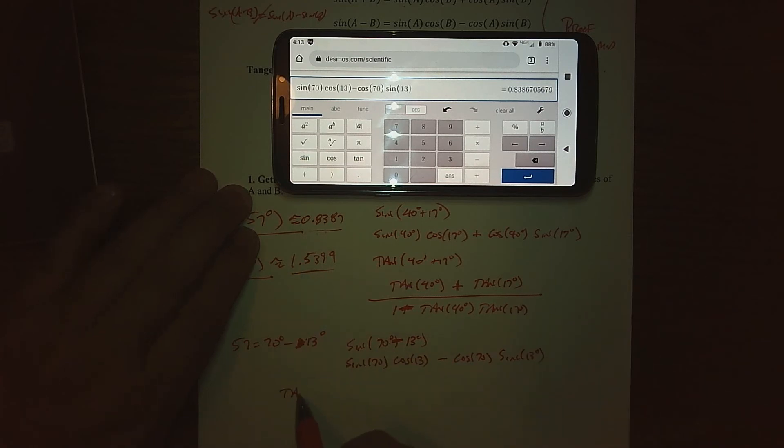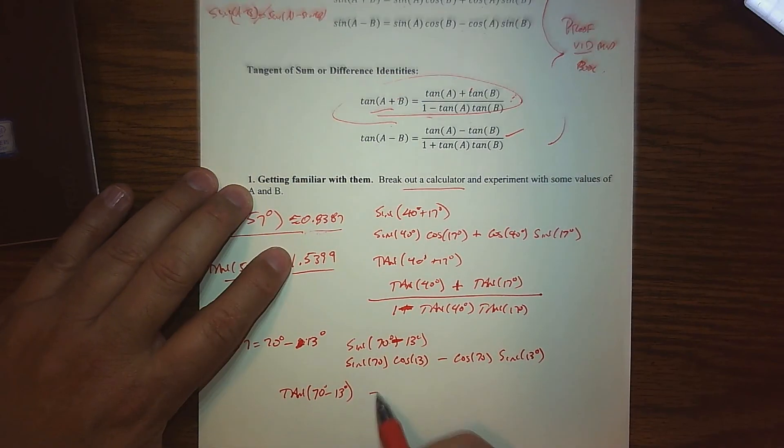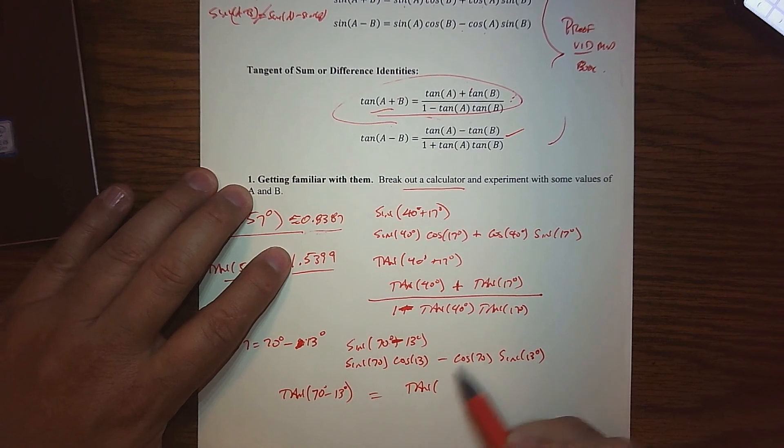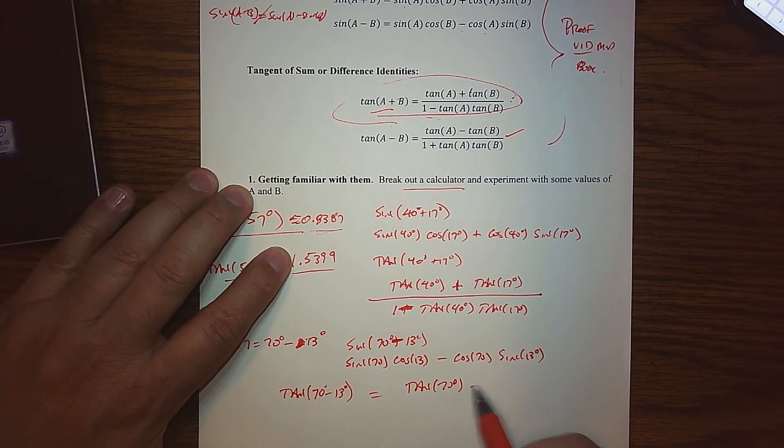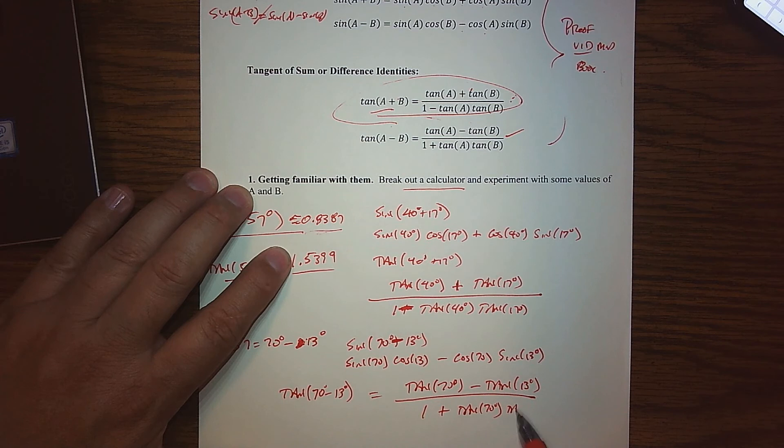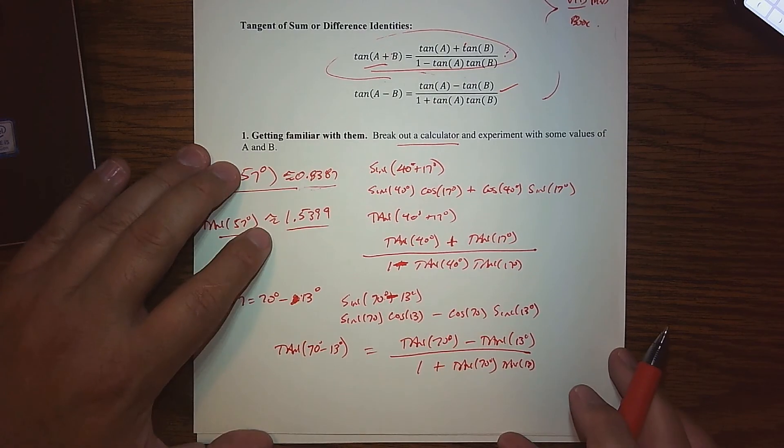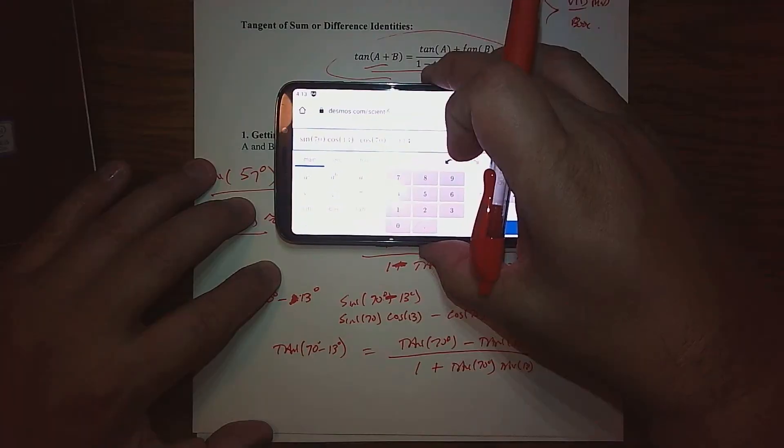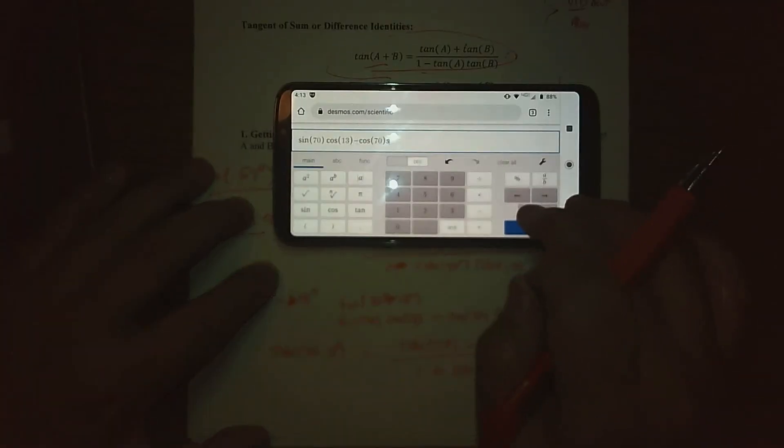And again, if we did the tangent, the tangent of 70 minus 13, well, that one would be this guy. And so we're talking about the tangent of 70 degrees minus the tangent of 13 degrees all over one plus the tangent of 70, the tangent of 13. So that's what the thing's telling us. We'll just reach over to the calculator and verify it with technology.